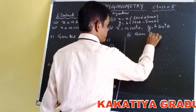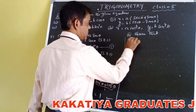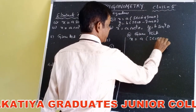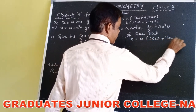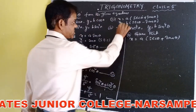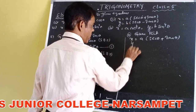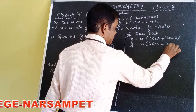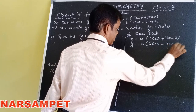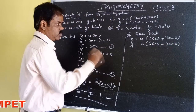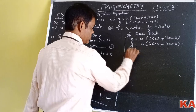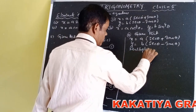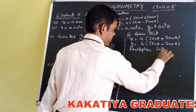Now see the second problem. Given that x = a(secθ + tanθ) and the second equation y = b(secθ - tanθ). Multiply both these equations.